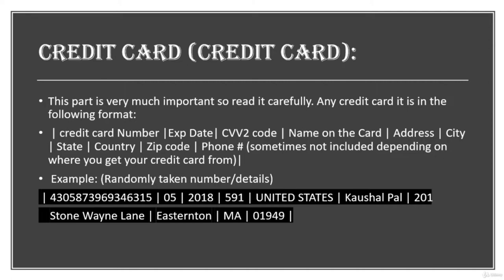Credit card is the most important part. A credit card includes the following details: credit card number, expiry date, CVV code, name on card, address, city, country, zip code, and more. This is the format you will see when you buy a CC from the surface web or dark web.